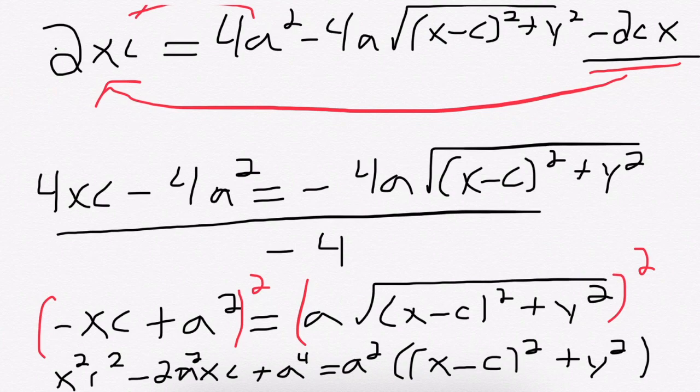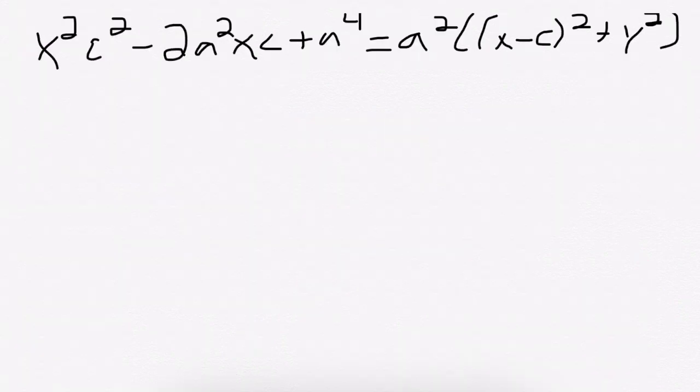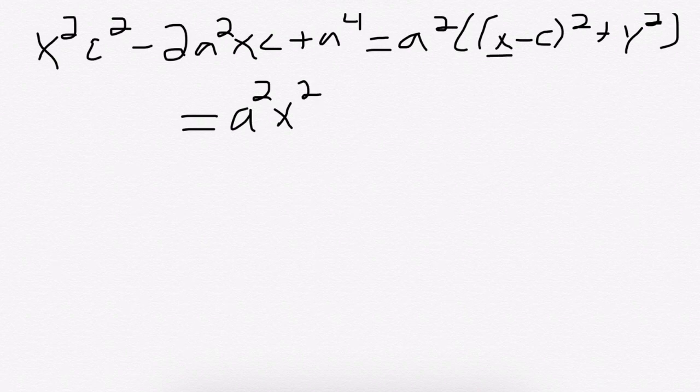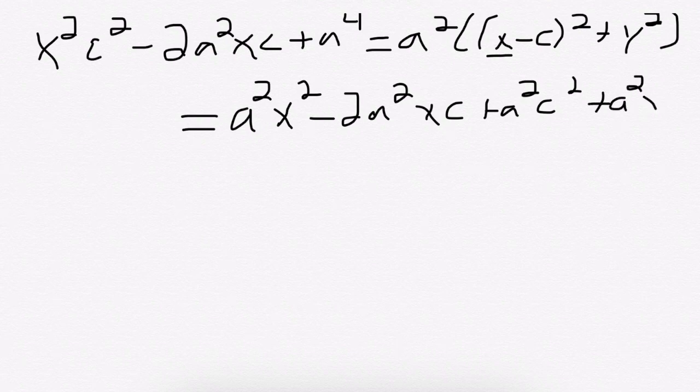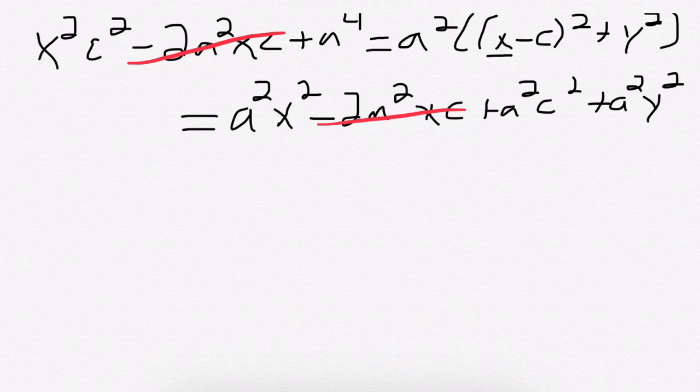So now that we're here, what we're going to do is expand the right hand side a little bit. I'm not going to rewrite the left, just for simplicity. And this is going to become an a squared x squared from the first term squared, minus a 2a squared xc, plus an a squared c squared term, plus an a squared y squared term. What we should notice here is thankfully something cancels out. We can get rid of these minus 2a squared xc.